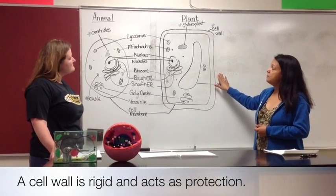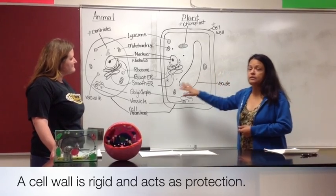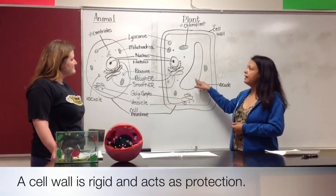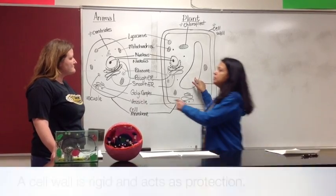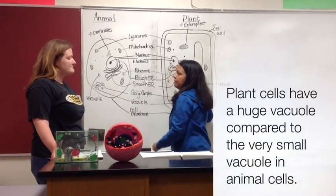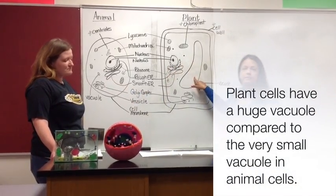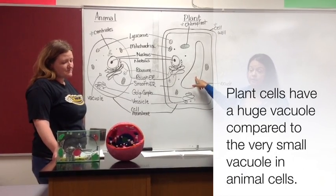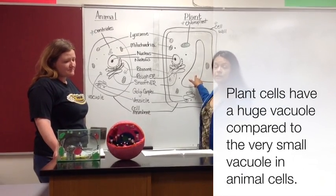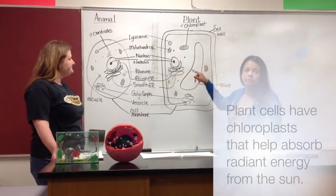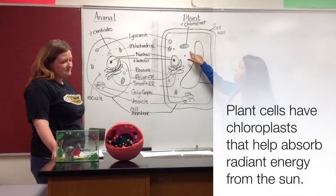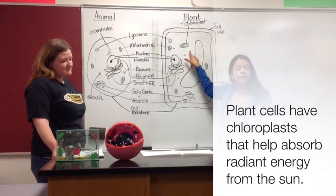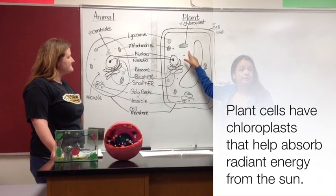Another item that the plant cell has that the animal cell does not necessarily have is going to be a huge vacuole. Please remember that the animal cell does have a vacuole, however it's tiny compared to that of the plant cell — this one is going to be very, very big. And the last thing to differentiate between the two is that the plant cell has the chloroplast to help absorb radiant energy from the sun.